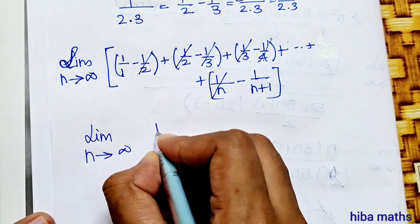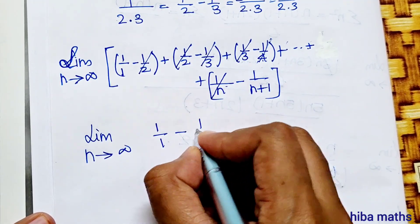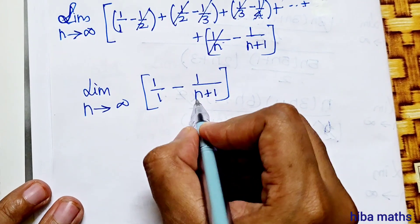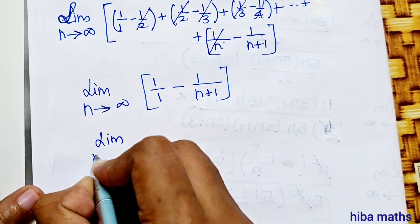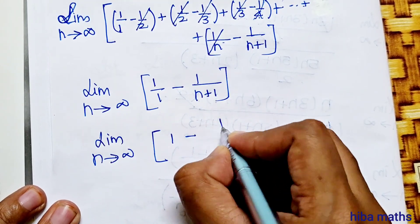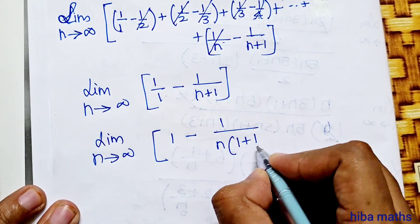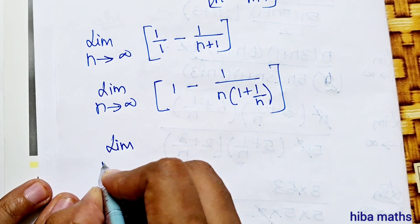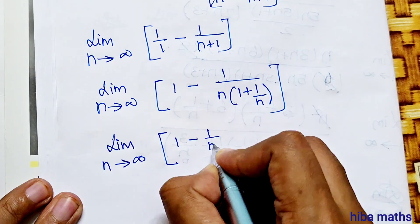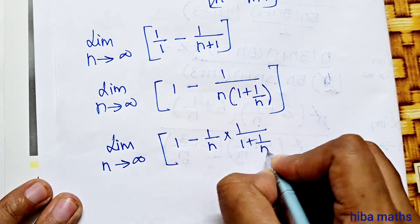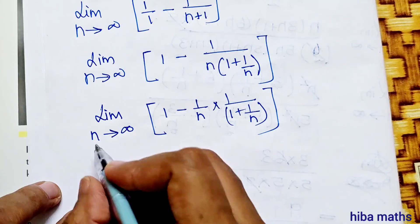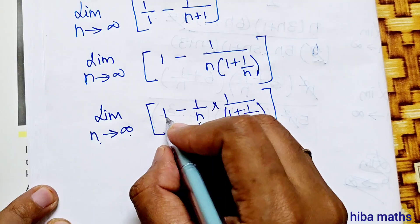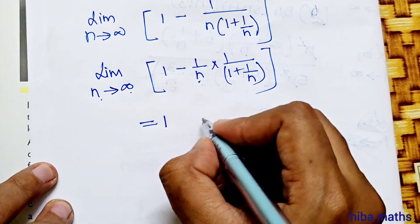The balance after cancellation is: limit as n turns to infinity of 1 minus 1 by (n+1). As n turns to infinity, 1 by (n+1) equals 0. So we get 1 minus 0, which equals 1. Hence the limit equals 1.